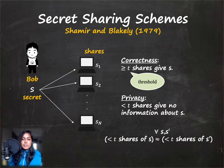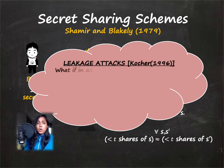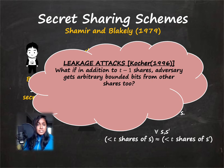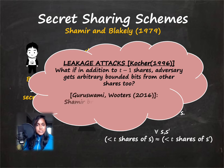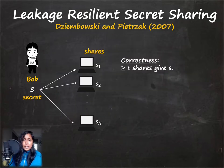In this talk we'll be in the information-theoretic setup, so closeness is in the sense of statistical distance. About two decades later, Kushilevitz in 1996 introduced leakage attacks. Naturally the question is: what if in addition to T minus one shares, the adversary gets some arbitrary bounded bits of leakage from the remaining shares as well? Such information could be lethal — in fact Guruswami and Wooter showed in 2016 that the Shamir secret sharing scheme, one of the most widely used schemes in cryptographic protocols, breaks even if you give one bit of leakage from all the remaining shares besides the full shares.